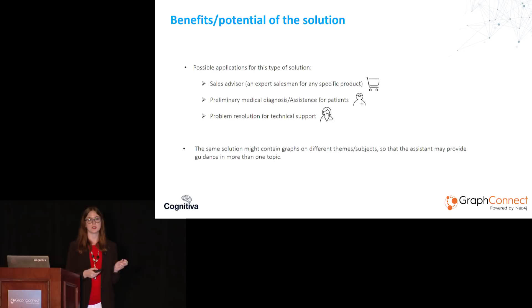To sum up, this is what we did at Cognitiva: we enhanced our virtual assistant with the use of a graph database in Neo4j, making them proactive and able to ask the best question at each step to the user in order to learn their preferences and do this in the fastest way possible, so that we can provide good advice for the user. That's all for my part — thank you very much for listening.